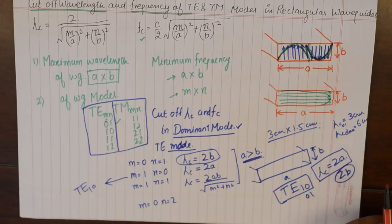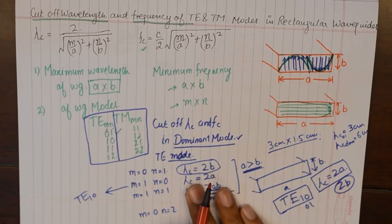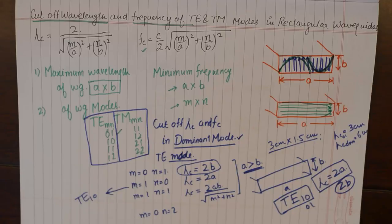Once we understand that a waveguide's dimensions cannot be changed, it is only the modes with which we can play around to increase or decrease the operating frequency. With this understanding, we shall be able to solve numericals based on cutoff wavelengths and cutoff frequency. I will continue this tutorial by taking up a numerical example in the next part.